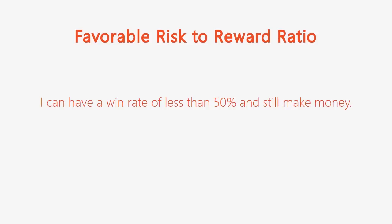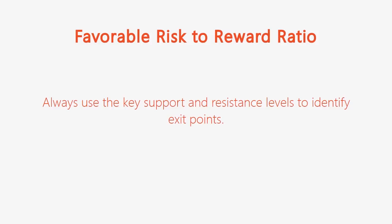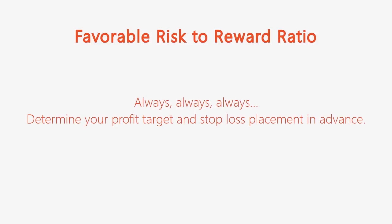To find your profit target and stop loss placement: always use the support and resistance levels we learned earlier — trend lines, horizontal levels, or a combination with Fibonacci and areas of confluence. Use these key levels to define your entries, targets, and stop loss placement. And always, always determine your profit target and stop loss placement in advance — as soon as you enter a position you're no longer unbiased, so you want to make those decisions before you have money at risk.